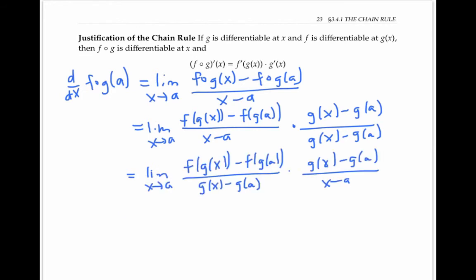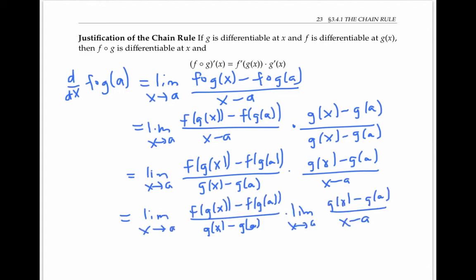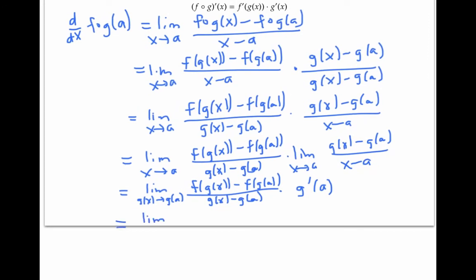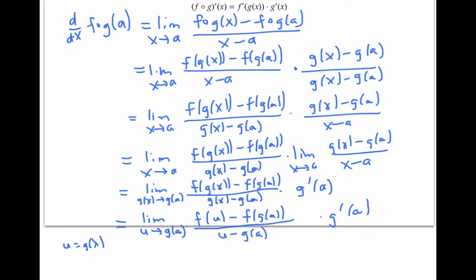Rearranging and rewriting the limit of a product as the product of limits: the limit on the right is just the derivative of g. For the limit on the left, as x goes to a, g(x) goes to g(a), since g is differentiable and therefore continuous. Letting u equal g(x), I can rewrite the left limit as the limit as u goes to g(a) of f(u) minus f(g(a)) over u minus g(a) — which is just the derivative of f evaluated at g(a). I've arrived at the chain rule expression.